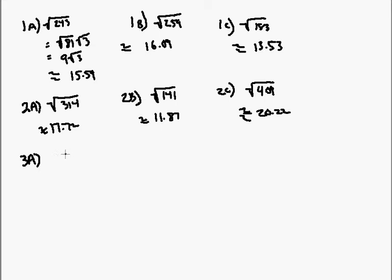3a: the square root of 154. That can't be broken down any further either — you've got a bunch of them like this — and that's 12.41.